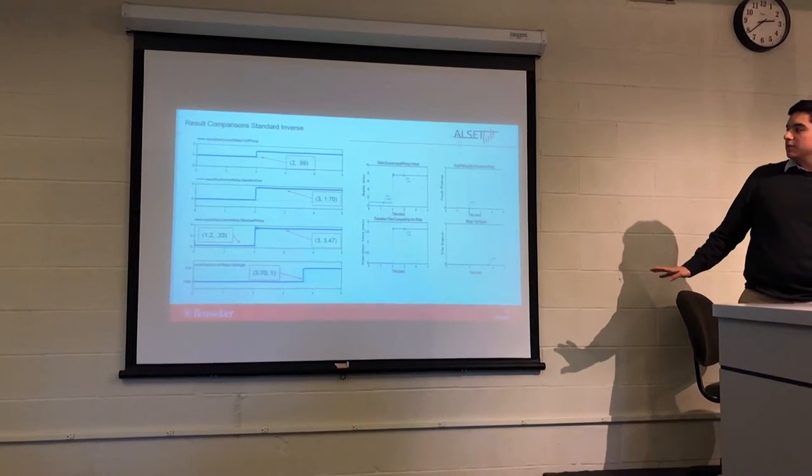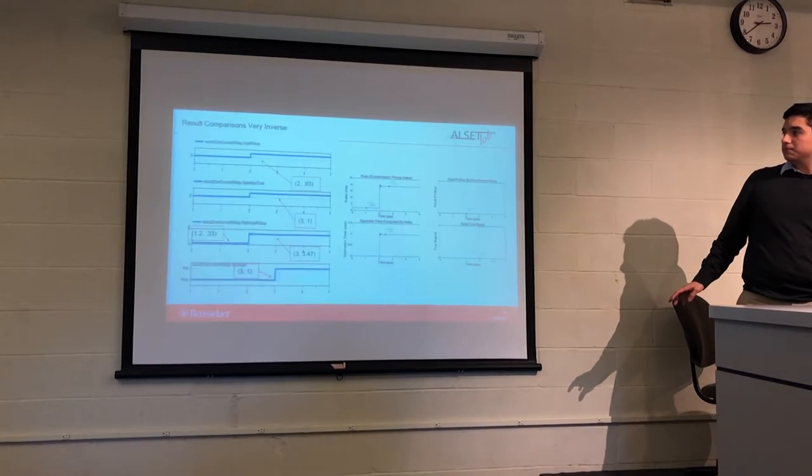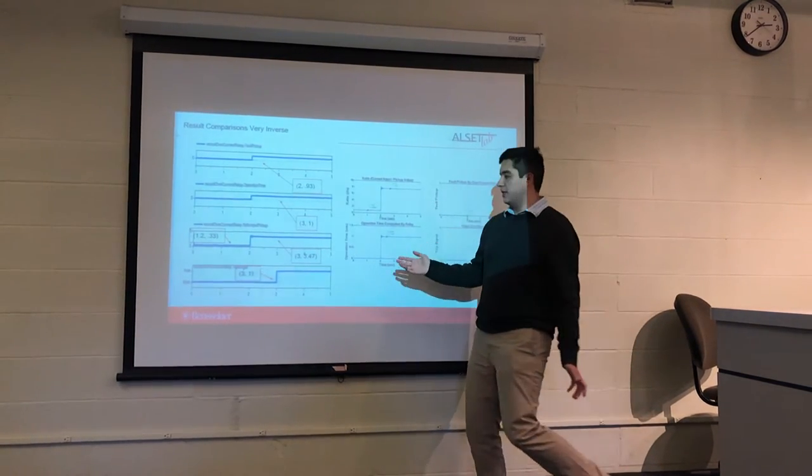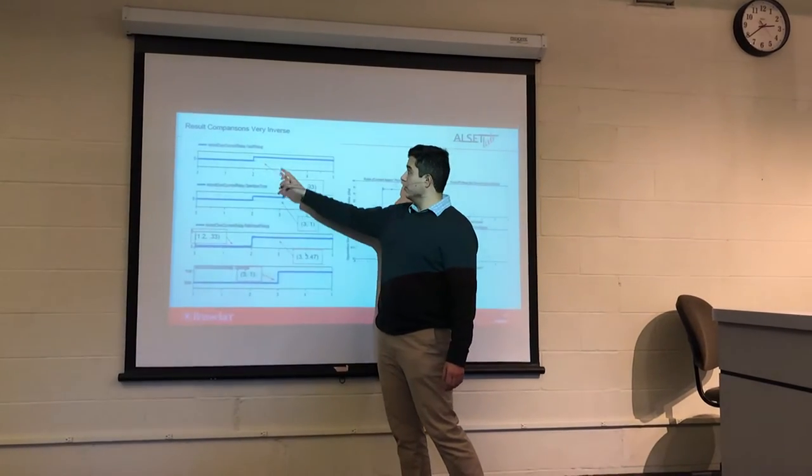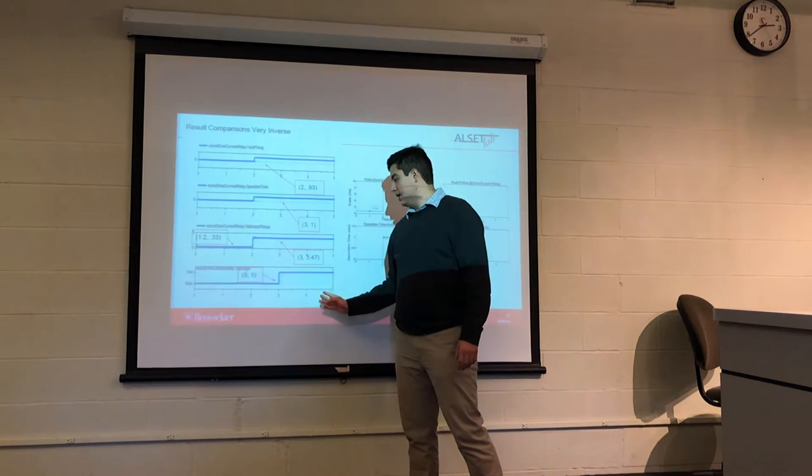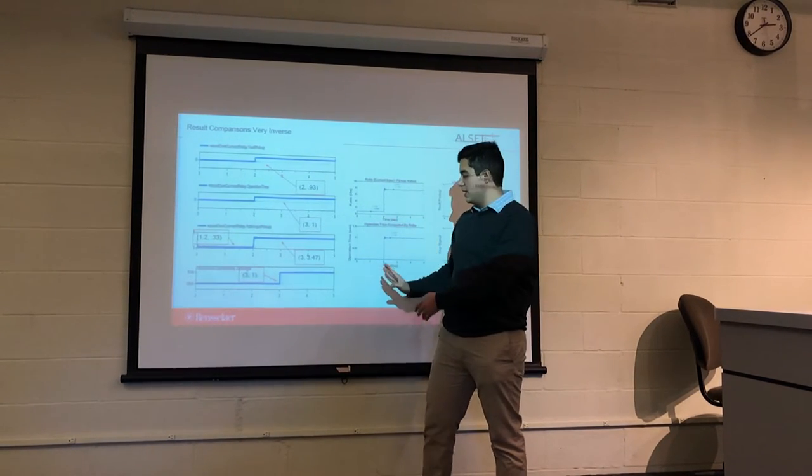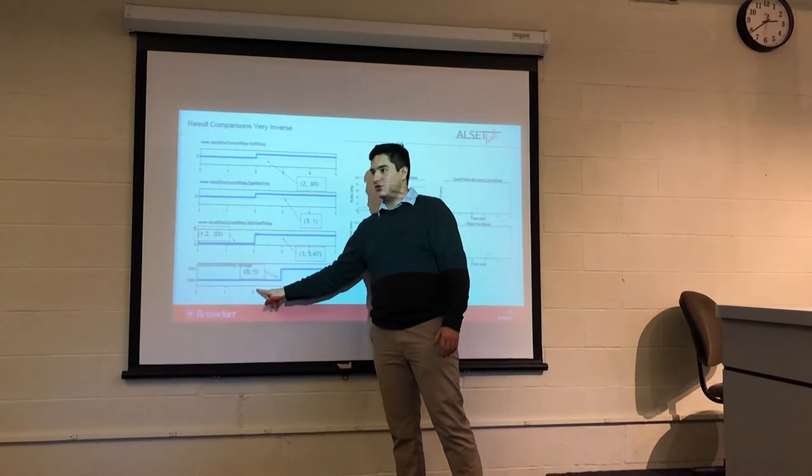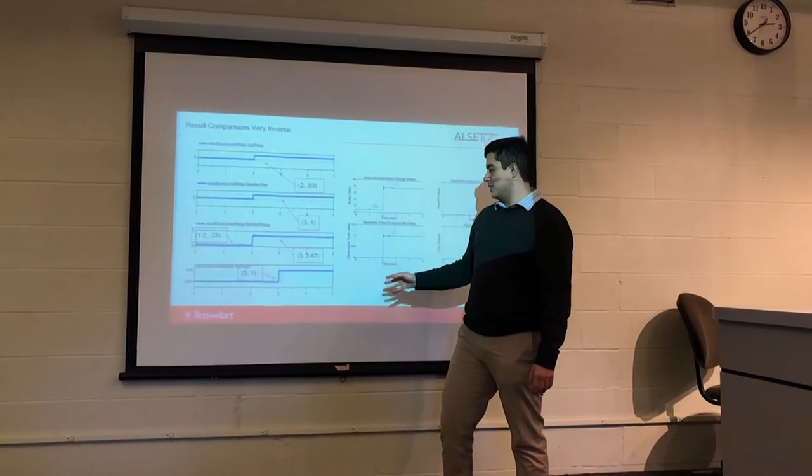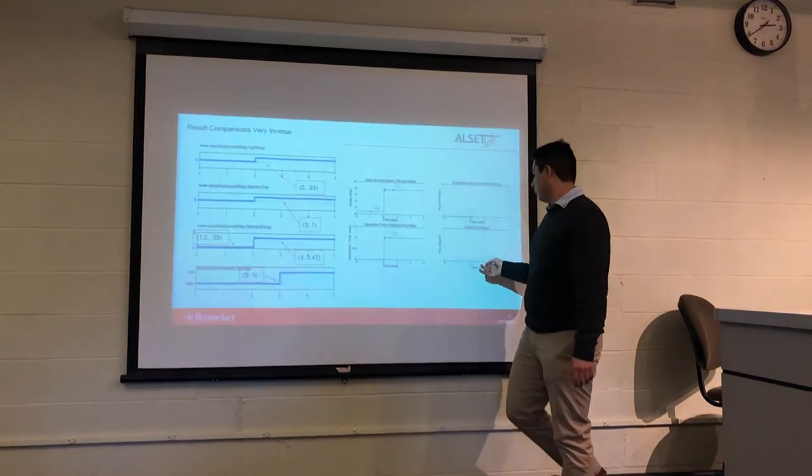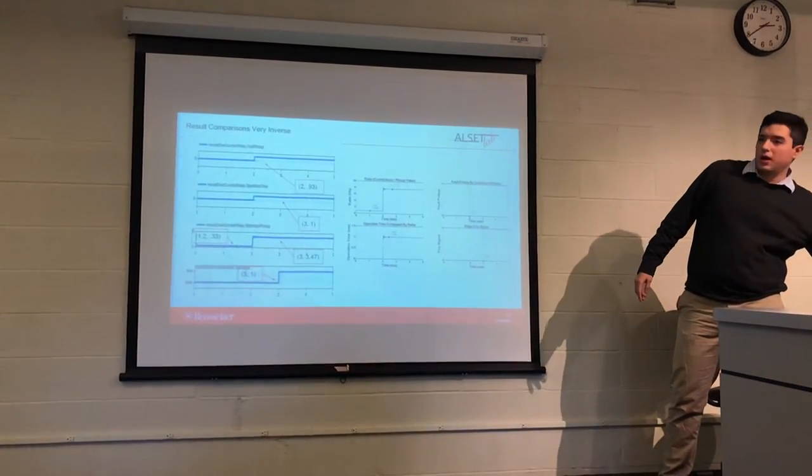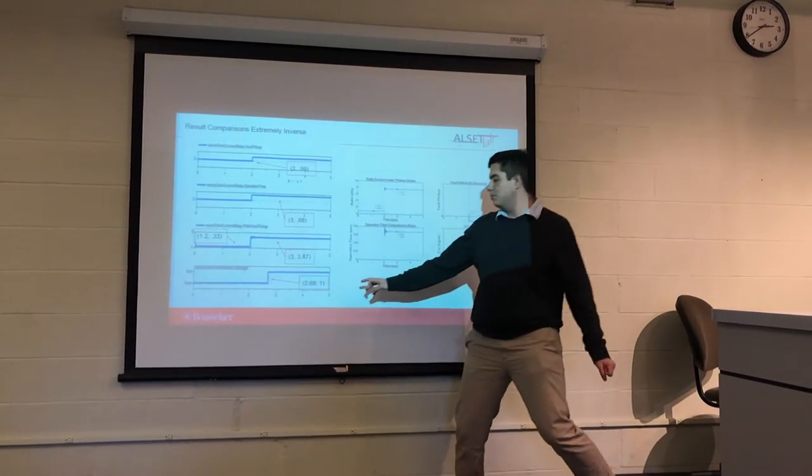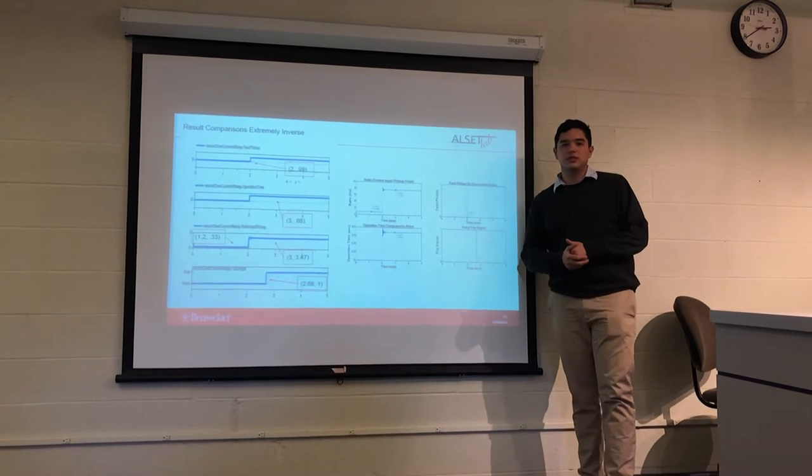This happens the same for all of the different types of relays. So, for example, in here, for the very inverse, we have a 3.1. We go from standard, very inverse, to extremely inverse, and the trip time, depending on the alpha and the C, starts going closer to whenever the fault actually happened. In this case, it goes to 3. Here, it's 2.99. And then lastly, the extremely, which ends up being 2.68, and then here, it's also like 2.67.